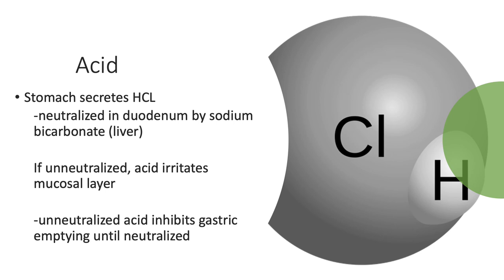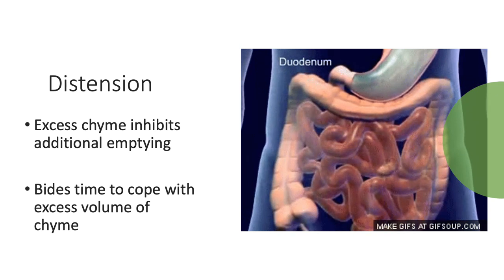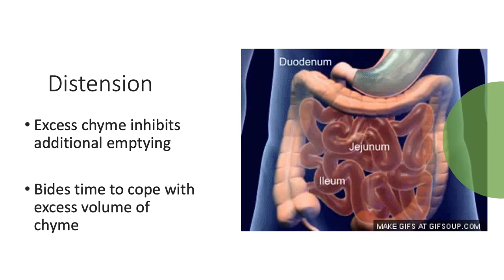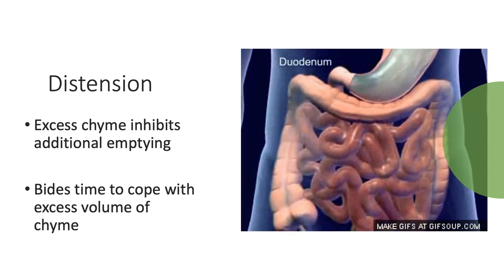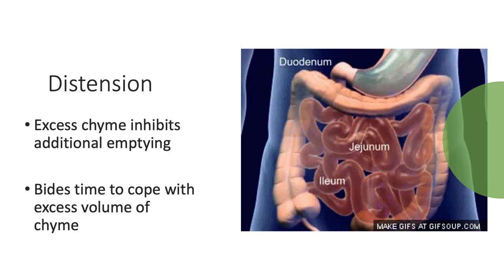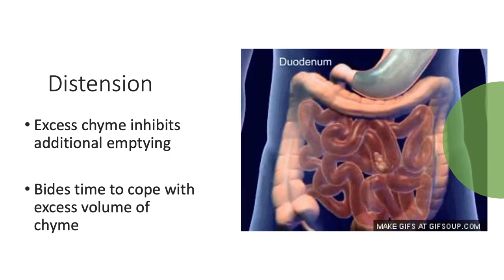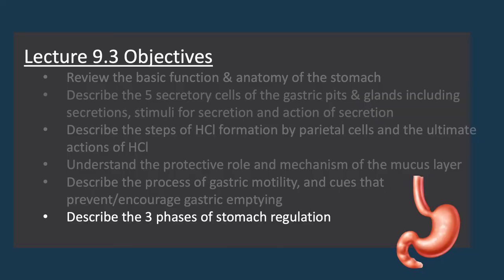Another cue is the presence of acid. The stomach secretes hydrochloric acid, which is neutralized in the duodenum by sodium bicarbonate produced by the liver. If it goes unneutralized, that acid irritates the mucosal layer — so unneutralized acid signals the stomach to stop gastric emptying until the existing acid can be neutralized. A third cue is physical distension of the duodenum: excess chyme prevents the stomach from emptying additional contents, biding time to process the excess volume before receiving more from the stomach.